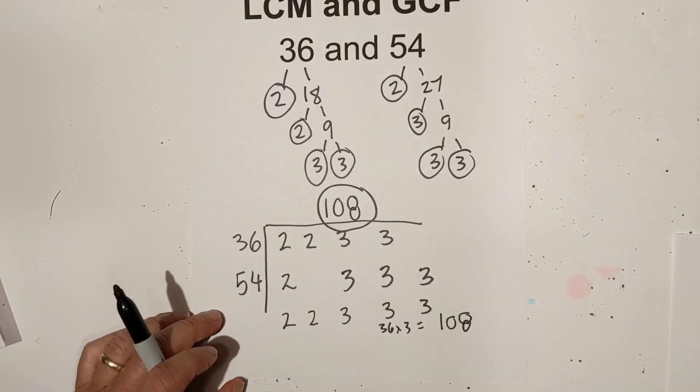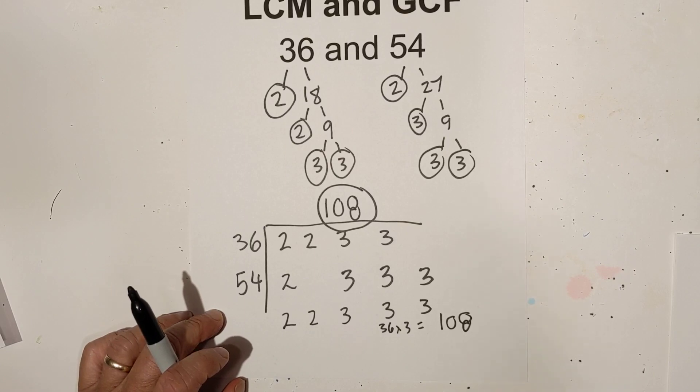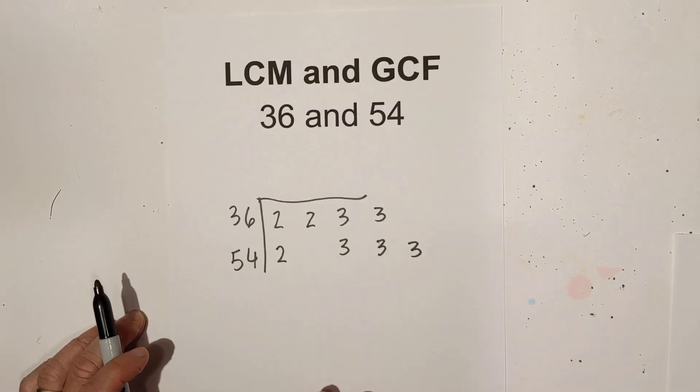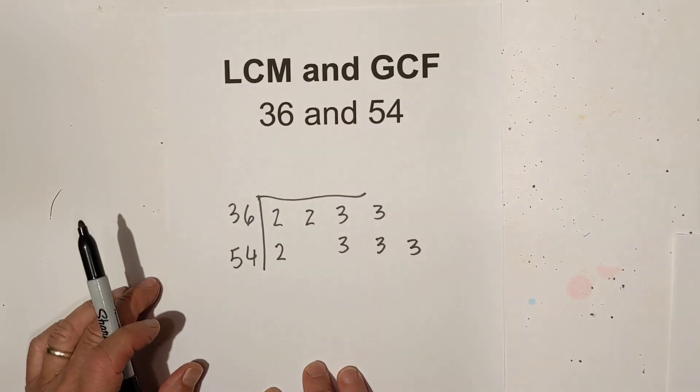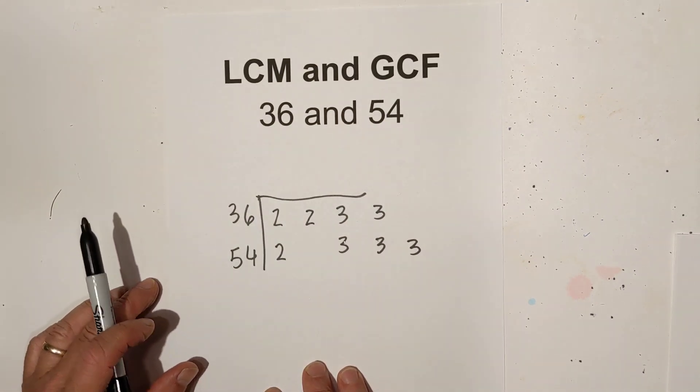Now let's look at the greatest common factor. The greatest common factor is the largest number that divides into both numbers evenly. You use this rule: